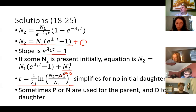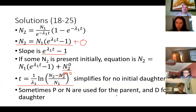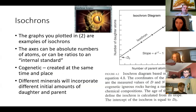You can see N or P used for the parent. Those graphs with those straight lines, when you plot the amount of daughter versus the amount of parent, those are known as isochrons.